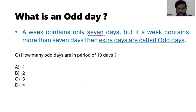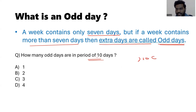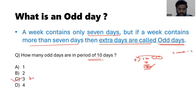Now let us understand what an odd day is. A week contains 7 days. If a period contains more than 7 days, the extra days beyond complete weeks are called odd days. For example, how many odd days are in a period of 10 days? Divide 10 by 7: 7 times 1 is 7, and the remainder is 3. So there are 3 odd days in 10 days. The answer is C.